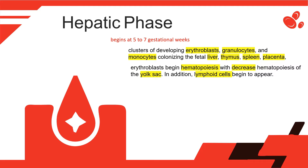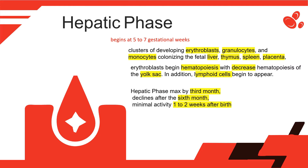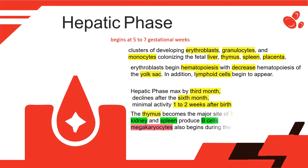Lymphoid cells begin to appear. The hepatic phase reaches its peak by the third month, then gradually declines after the sixth month, retaining minimal activity until 1–2 weeks after birth. The thymus becomes the major site of T-cell production, while the kidney and spleen produce B-cells. Production of megakaryocytes also begins.